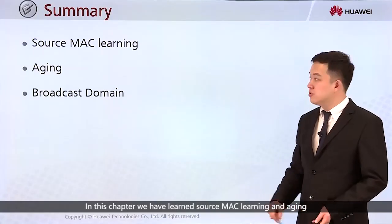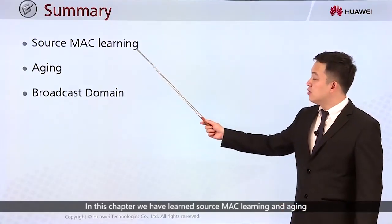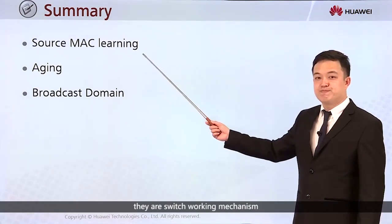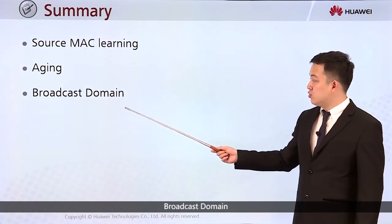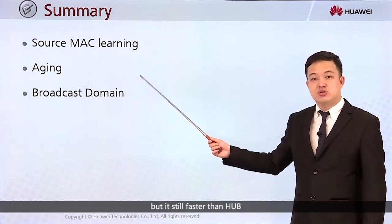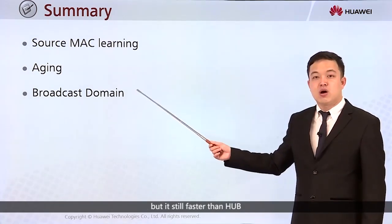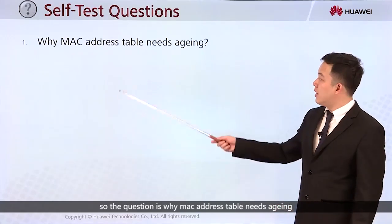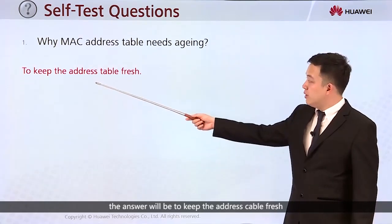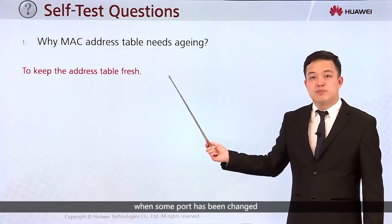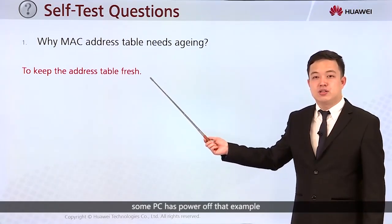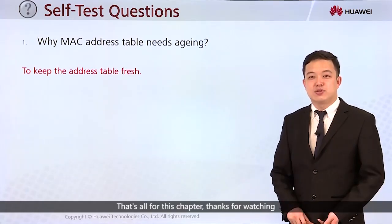In this chapter we have learned source MAC learning and aging — the working mechanisms of a switch — and the broadcast domain. A switch is one broadcast domain, but it is still faster than a hub. The question is: why does the MAC address table need aging? The answer is to keep the address table fresh — for example, when some ports have changed or some PCs have powered off. That's all for this chapter. Thanks for watching.